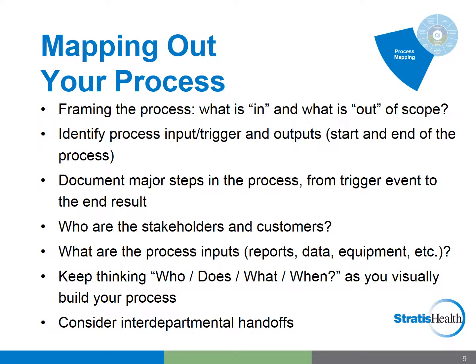Let's walk through some of the mechanics of how we map out a process. We'll talk through these and then provide an example. The first step is to frame the process, where you'll want to determine what is included and what is out of scope for a particular process you wish to diagram. Determining the trigger that starts the process and the end result or output is the exercise of framing the process, or putting boundaries around the work that you are diagramming. We then identify and document the major steps in the process from the trigger event onto the end result. As you add the steps, jot down who is responsible for carrying out each step. It's usually best to identify them by role or title rather than by specific name, especially when you consider turnover and scaling up or sharing the process with other units or facilities.